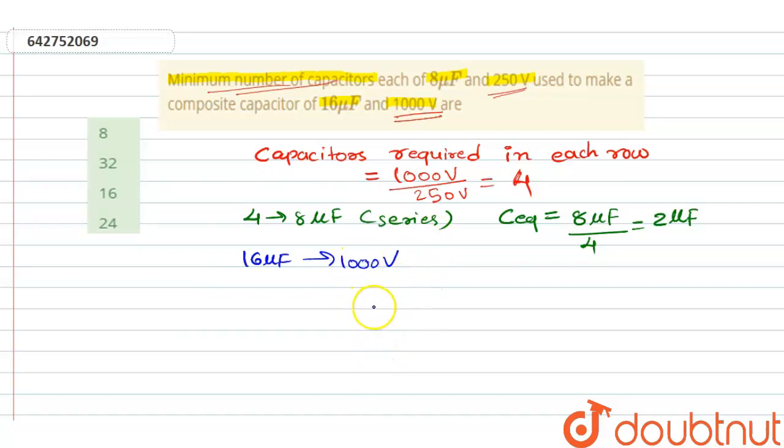So let's find the rows. We can find m times C equivalent, 2 microfarad, is equal to 16 microfarad.